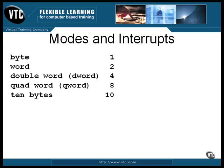The hardware doesn't stop there. The next size is 10 bytes — this one doesn't come up that often, but it does happen. Next is a paragraph, which is 16 bytes. It has a special hardware meaning I'll tell you about in a minute. The next boundary is called a page, which is 256 bytes, and is used for things like buffering and I/O operations.